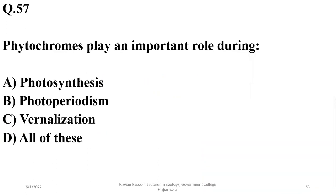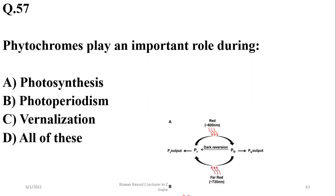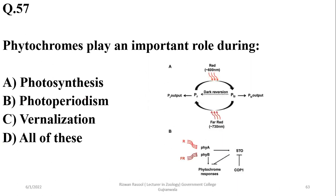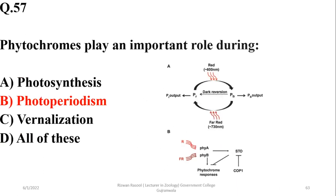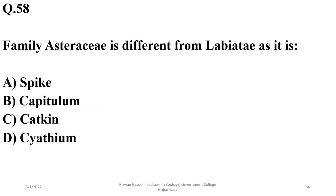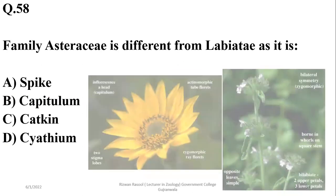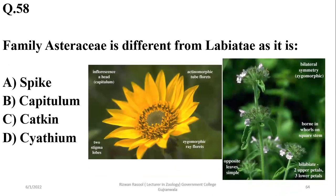Number 57. Phytochromes play an important role during photoperiodism. Right option is beta. Number 58. Family Asteraceae is different from Liliaceae in that it has a capitulum arrangement. So the right option is beta.